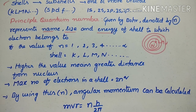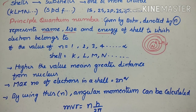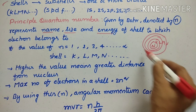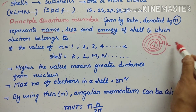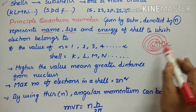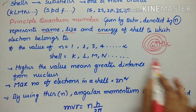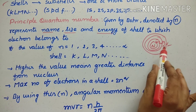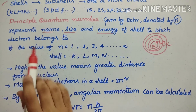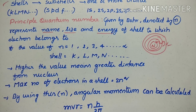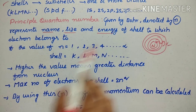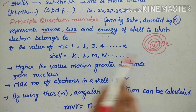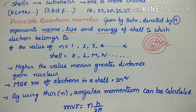So 'n' tells you the name, size, and energy of the shell. The value of n equals 1, 2, 3, and so on. Each value corresponds to a shell notation: if n equals 1, the shell is K; if n equals 2, the shell is L.